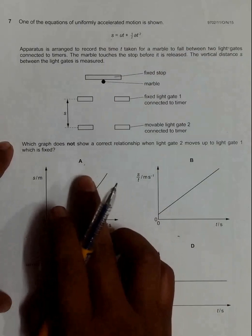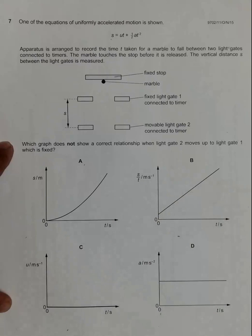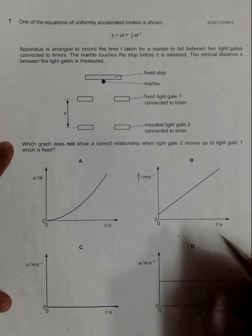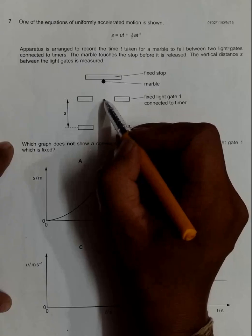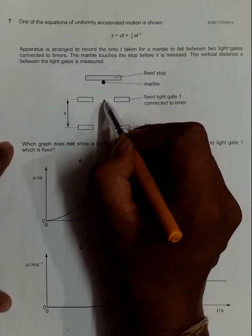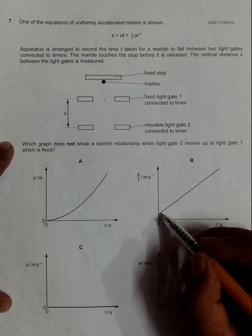Here we have s by T, which is velocity. Velocity will definitely increase linearly with time, and there is some initial velocity here. So this is u and it increases uniformly over time.